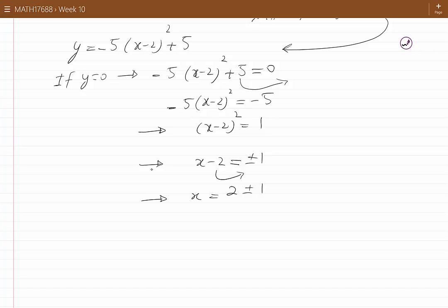Therefore, there are two x-intercepts. X-intercepts would be either 2 minus 1, which is 1, or 2 plus 1, which is 3. So there are two values for the x-intercept. Let's now sketch the curve.